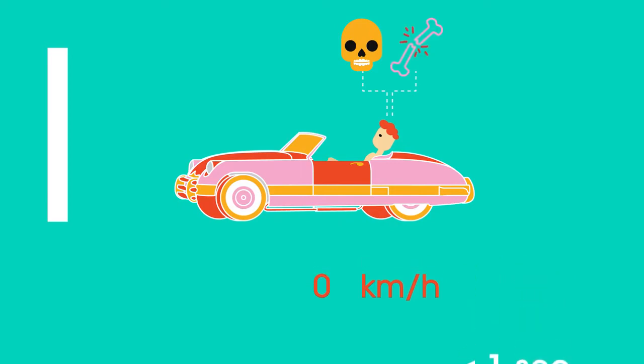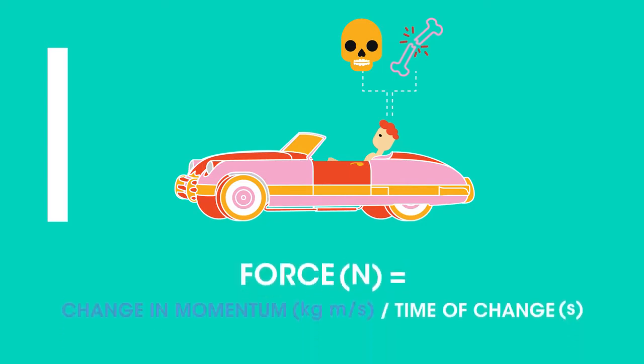We can calculate the force acting on the passengers using this equation. Force equals change in momentum divided by time of change. Where the force is measured in newtons, momentum is measured in kilogram meters per second and time is measured in seconds.